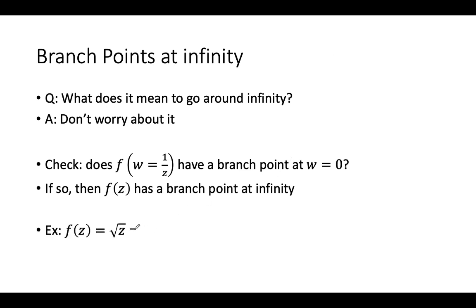If you have square root of z, then you have 1 over square root of w. Since you pick up a sign from going around the square root of something at 0, you pick up a sign here as well, just in the denominator. So this is also a branch point of square root of z. W equals 0 is a branch point, which means that infinity is a branch point of square root of z.